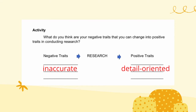What do you think are your negative traits that you can change into positive traits in conducting research? Write your negative traits on the left side and your positive traits on the right side. For example, under negative traits, you find yourself inaccurate. After conducting research, being inaccurate, you change into detail-orientedness. All of the traits you place in the activity are considered as your characteristics.